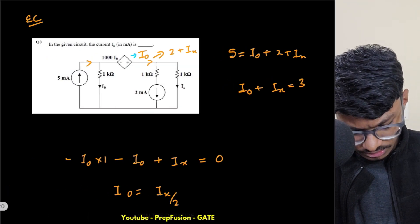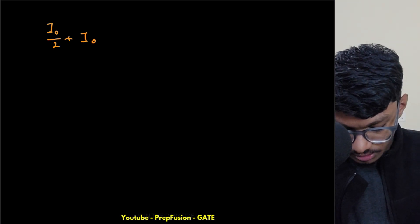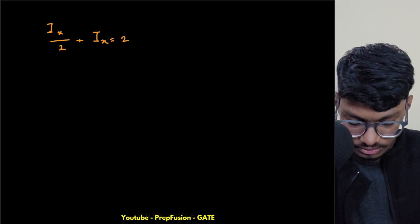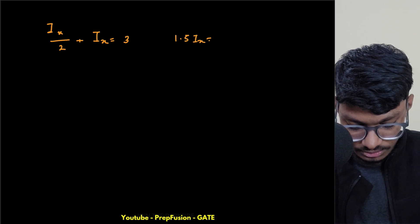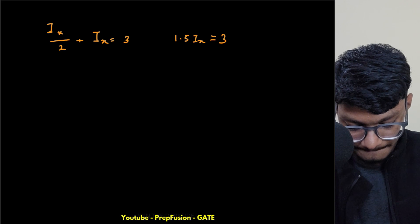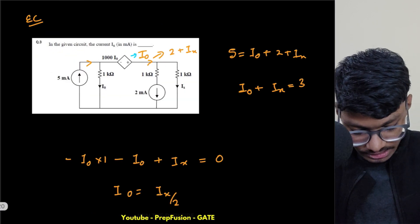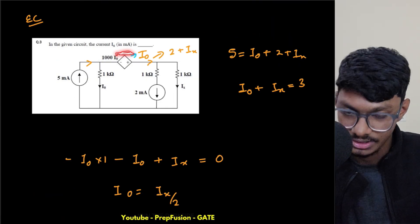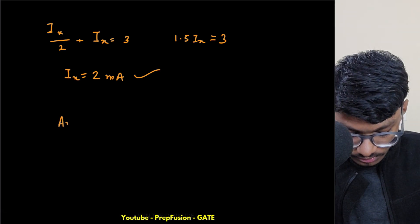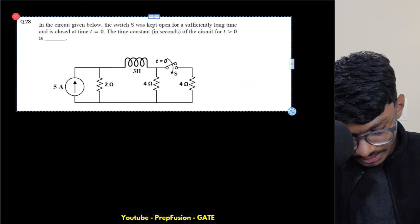Now substituting I_naught = Ix/2 into equation one: Ix/2 + Ix = 3, so 1.5·Ix = 3, giving Ix = 2 milliamps. So the answer to this question is 2 milliamps — since they asked to answer in milliamps, the answer is just 2.